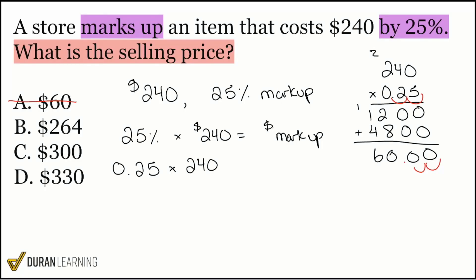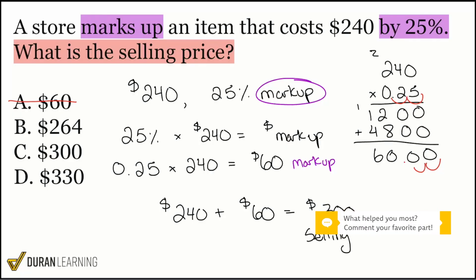So from here, there it is. 0.25 multiplied by 240. That is $60. But again, everybody, this is the markup. This is the markup. That is what we are adding back to get that selling price. So we had the original $240. And we're adding the $60 markup. And that's what brings us to the final amount here. And that'll be $300. That is going to be that selling price after the 25% markup. So again, that's how we achieve answer choice C as the correct answer.